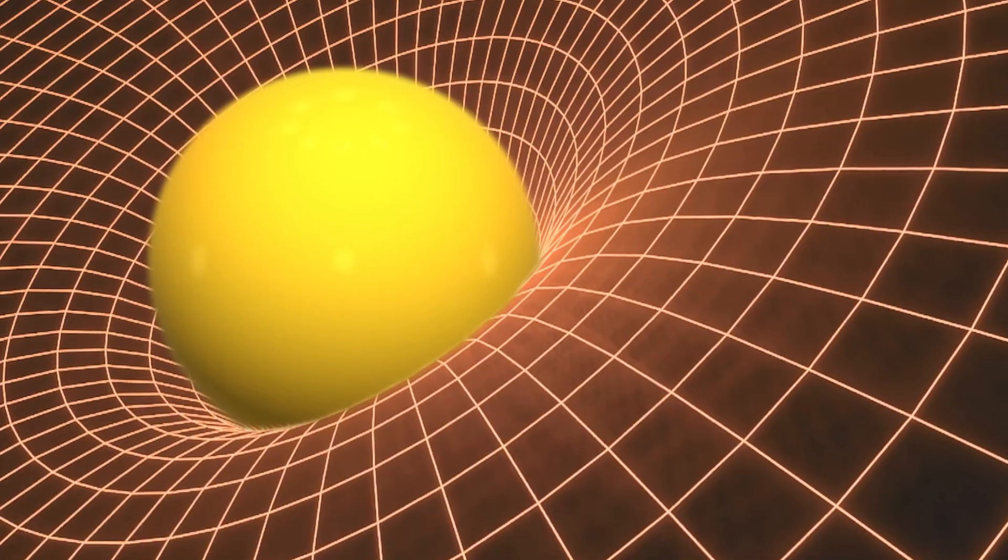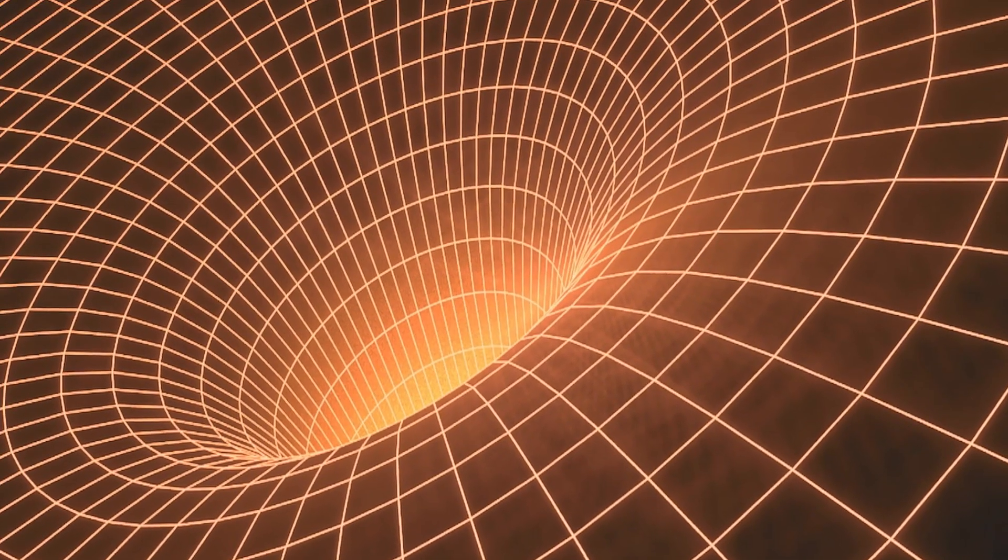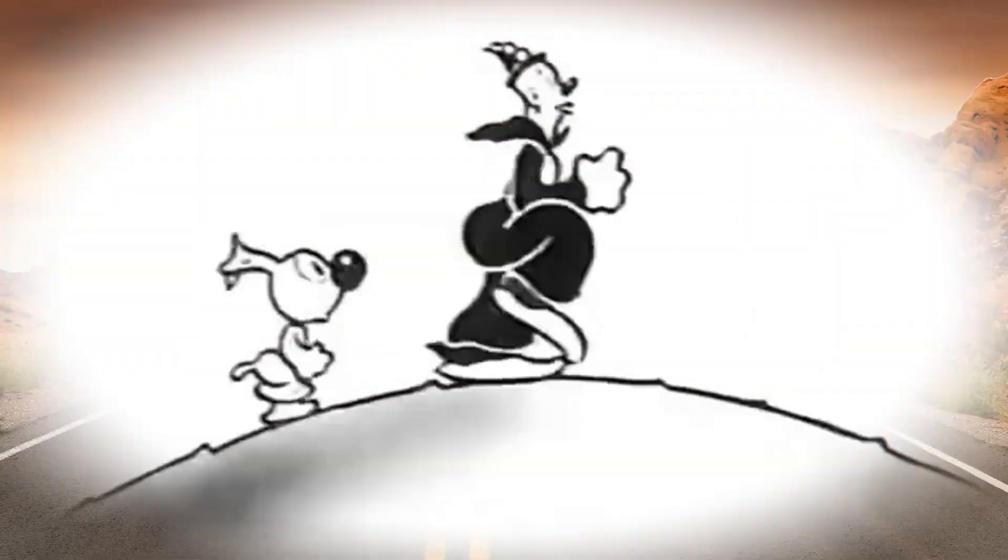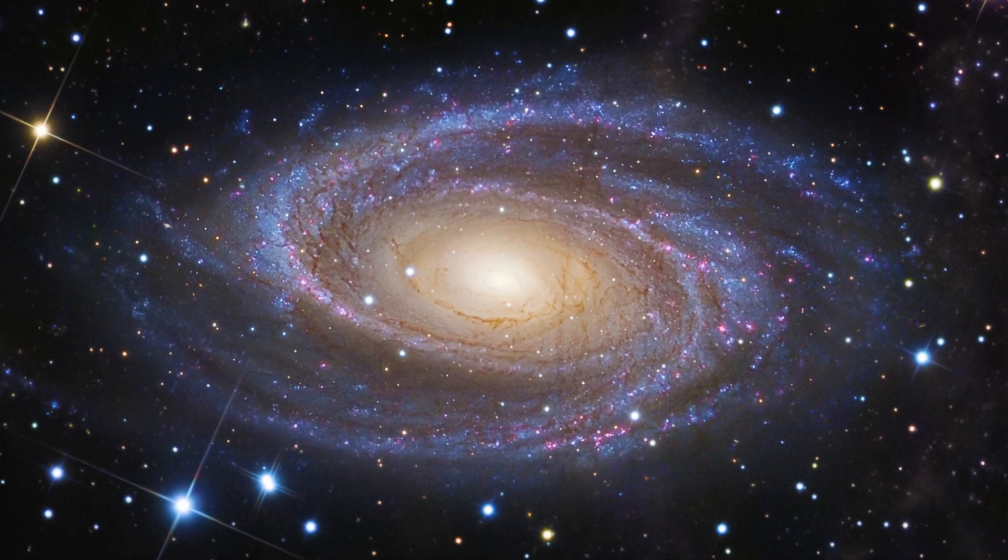Put a heavy object like a star onto this fabric and it creates a dent, warping the paths of nearby objects. What we perceive as a straight line is really just objects following the curvature of space-time.